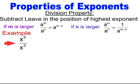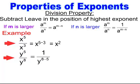For example: x to the 5th over x to the 3rd — it's division, the highest exponent's on top, so I subtract 3 from 5 and get x to the 2nd power. When I have y to the 5th over y to the 8th, I subtract the exponents, but because the highest exponent is on the bottom, it stays on the bottom. We end up getting 1 over y to the 3rd.